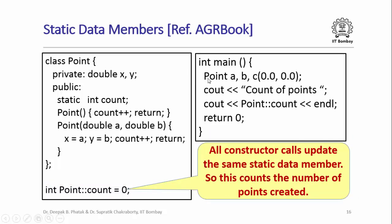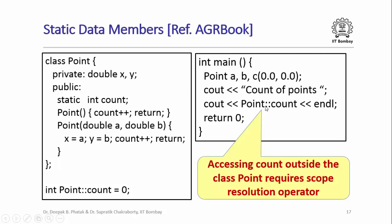In my main function, I create three different objects of class Point, so the appropriate constructors are called. As each constructor is called, it increments that same static data member count. After all three objects are created, the count holds the number of Point objects created, and I read and print that value using Point::count. I am able to access the static data member this way in main because it has been declared public. This data member is not associated with any of the individual objects but is shared by all three.